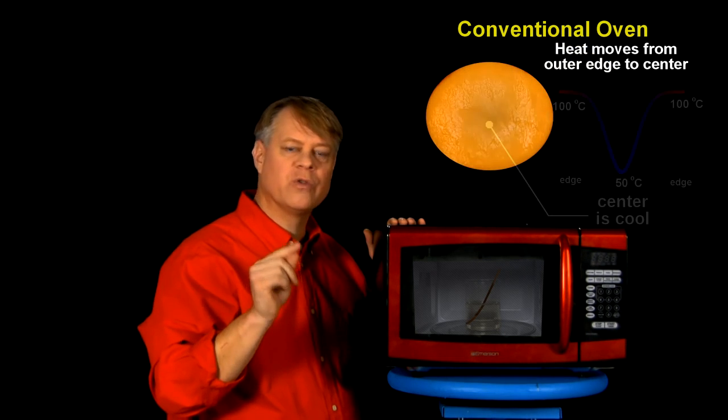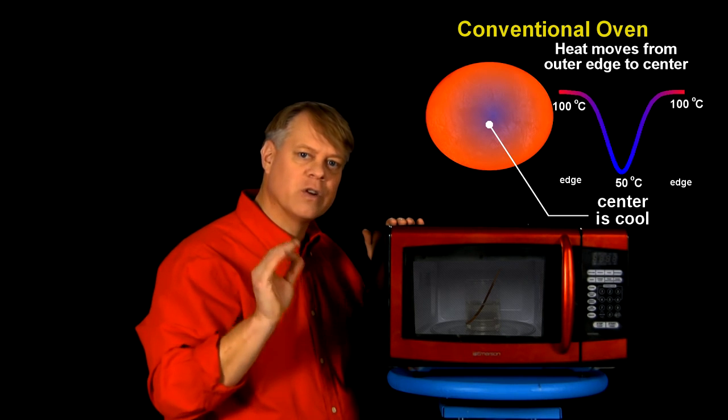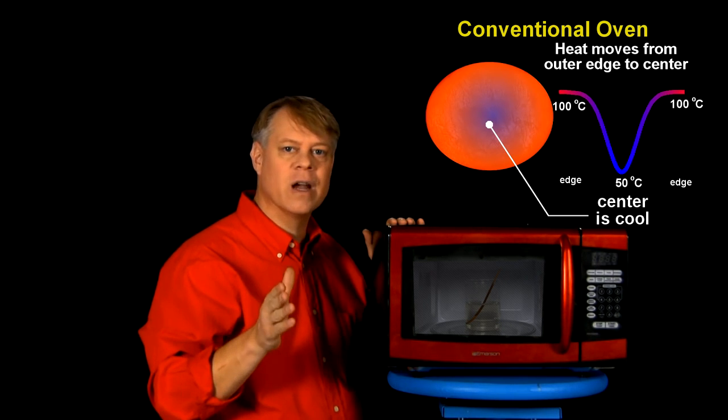In a traditional oven or stove, we heat food by placing a pan on a burner, or in the oven where the walls radiate heat, which cooks the outside of the food. The insides cook when heat transfers from the surface of the food to its interior.